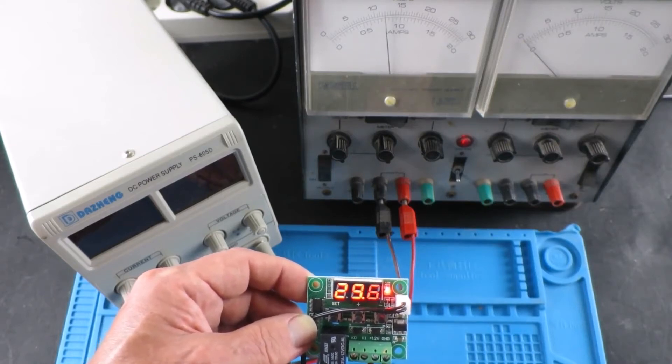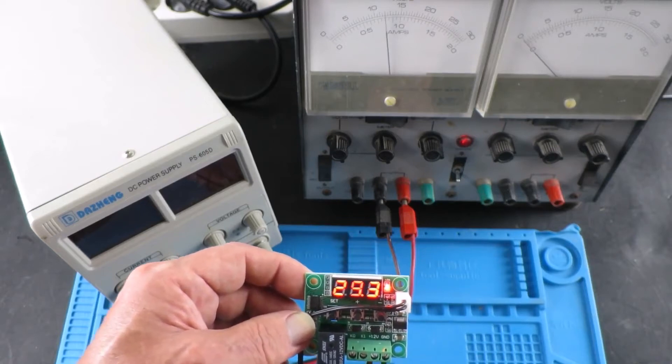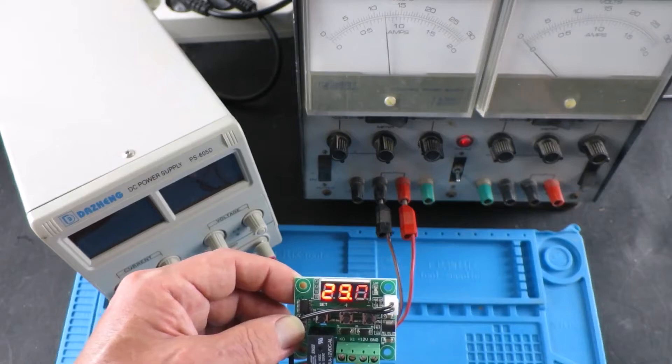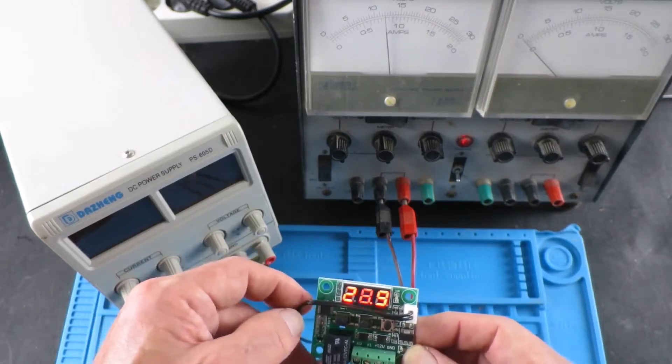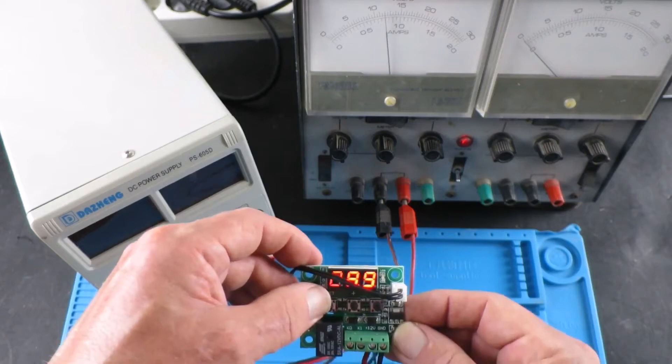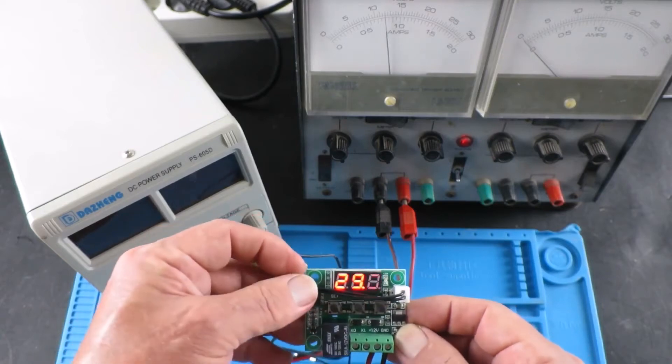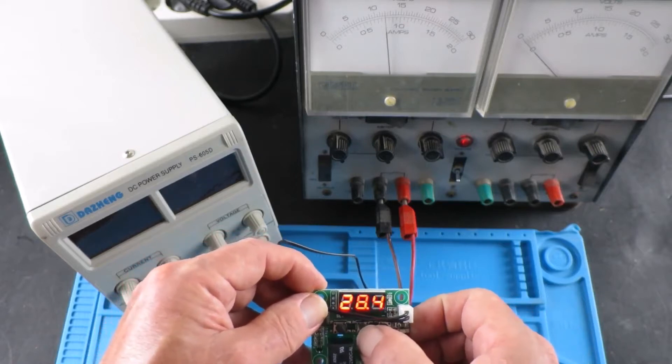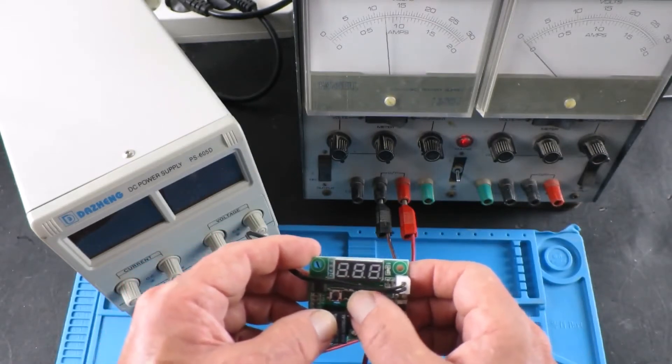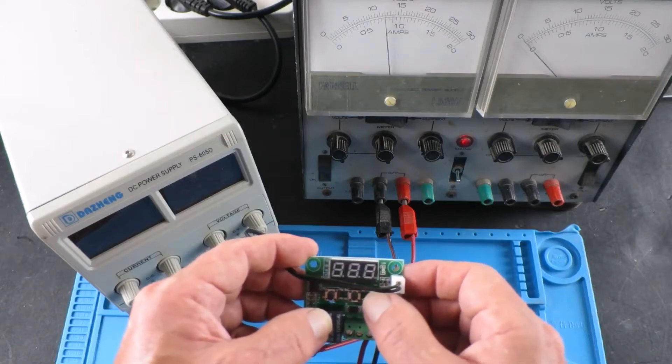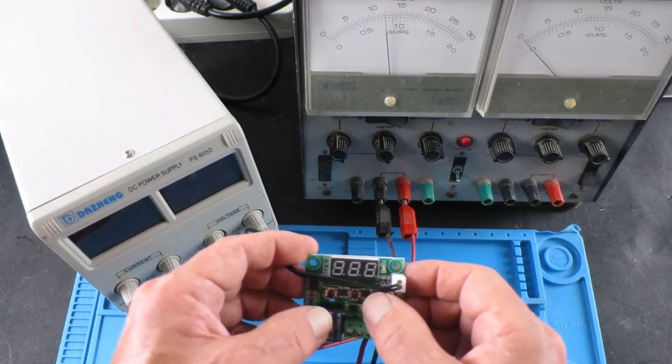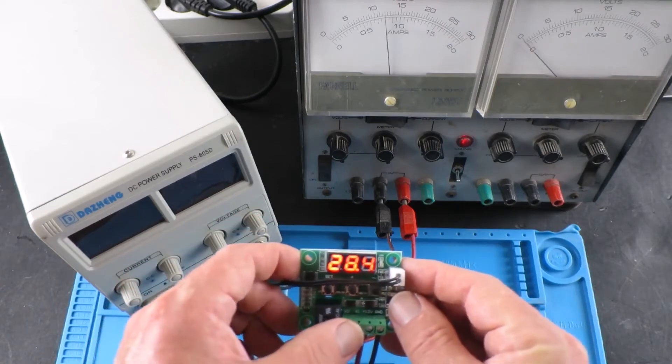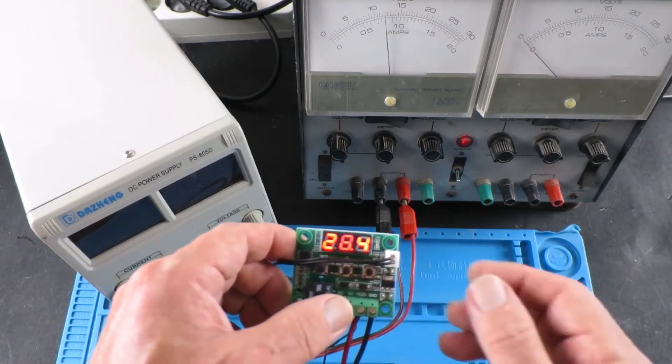So these are very simple to set up. It's just a little push button on there to set the temperature. As you can see, it was set to 29. You've got a little plus and minus. You have to press it till it's flashing, and then you can set the temperature. In this mode here it just shows you what the current temperature is.